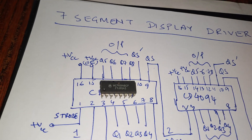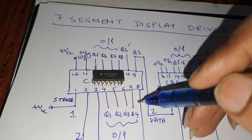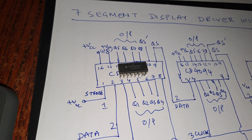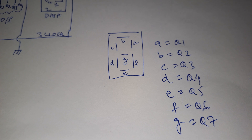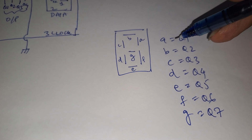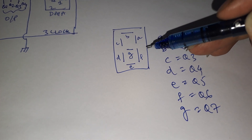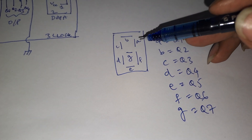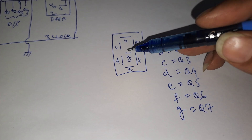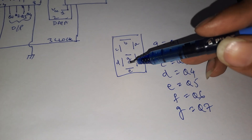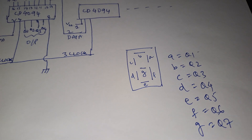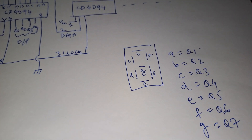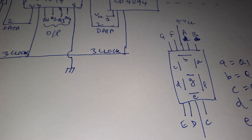So Q1, Q2, Q3, Q4 will go to segments a, b, c, d, e, f, g of the 7-segment display. Q1 connected to terminal a — when Q1 goes high, that segment of the LED glows. Q2 to b, Q3 to c, Q4 to d — and so on in sequence. I will make a separate video on how to program the 7-segment display, so I am not going deep into that topic right now.